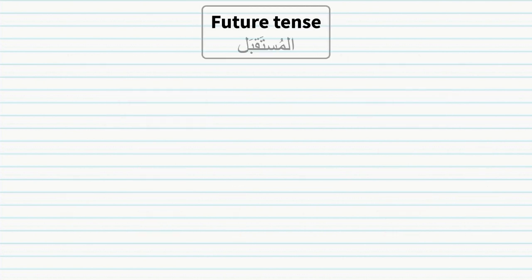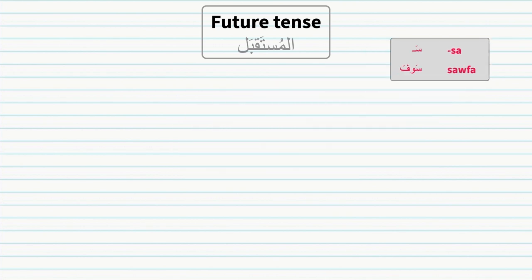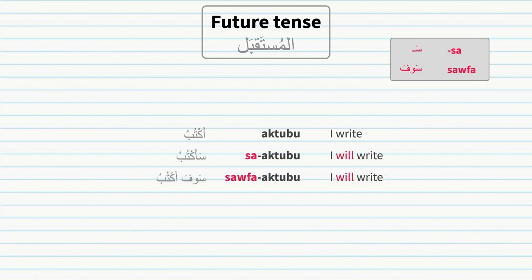Future tense: the future tense in Arabic is almost the same as the present tense. The only difference is adding 'sa' or 'sawfa' in front of the verb. For example, 'aktub' means 'I write'; 'sa-aktub' and 'sawfa aktub' both mean 'I will write'.